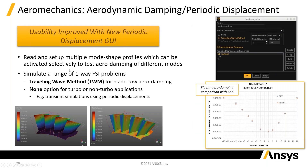Aerodynamic damping is a one-way FSI problem where you look at the modes and see whether they are going to damp out or not, and what the damping factor is. You can see a comparison here of the damping factor versus the mode number, and Fluent and CFX are giving pretty well identical answers. That's another technology that has come across into Fluent.